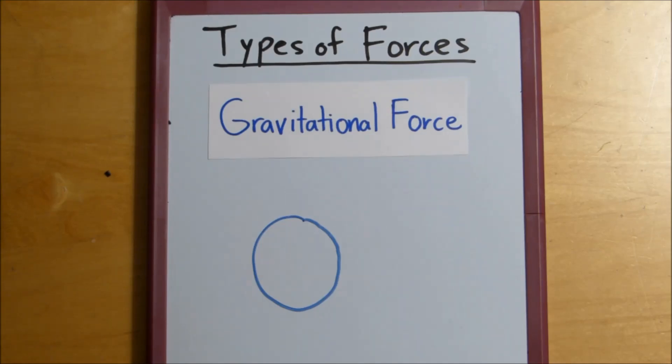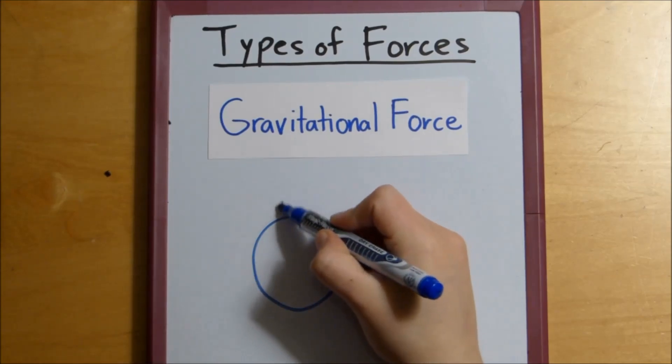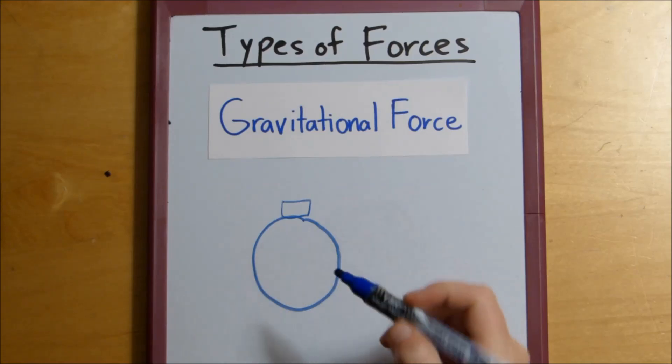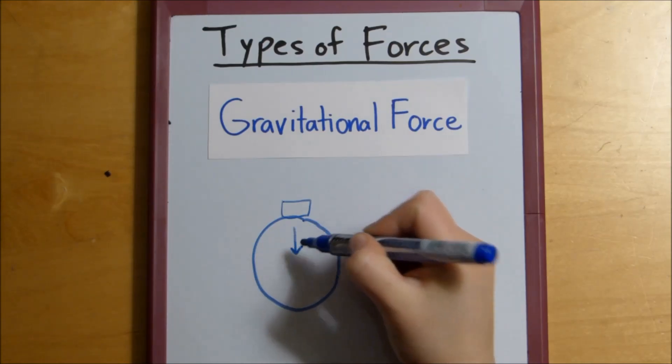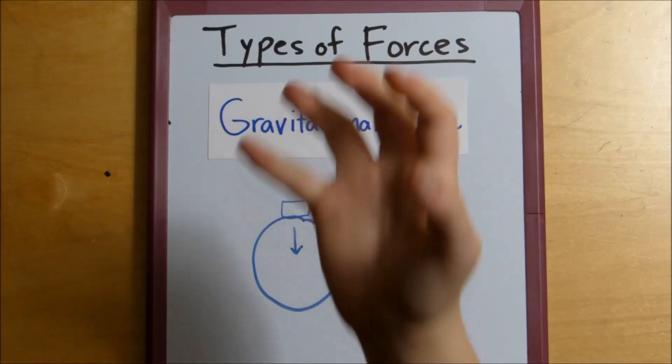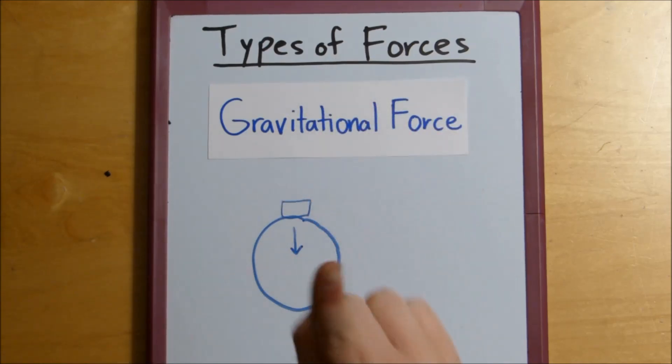So the gravity on Earth pushes objects down. So if that box was on Earth, it would be pushed down to the ground. Earth's gravitational pull is so strong that it pushes it down. It won't let it float back up.